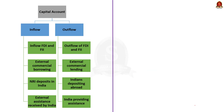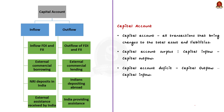Now let's take capital account. While current account includes all transactions that do not bring change to total assets and liabilities, the reverse is true for capital accounts. The capital account includes all transactions that bring changes to total assets and liabilities. For example, if India is borrowing funds from another country, it is a liability because we must pay it back. If India is lending to another country, it is an asset because India will earn interest and get its money back. The capital account includes foreign investments like FDI, foreign institutional investment, equity market investments, external commercial borrowing by private corporations and the government.